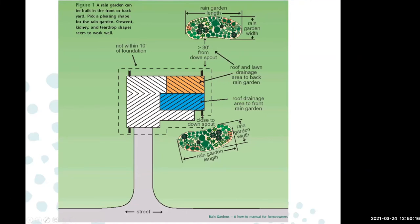Here's an example: if one half of your roof is draining to one side and that's roughly 1,000 square feet, a good estimate from the table in the publication HENV-205 would point to a garden of at least 100 square feet. Suggested dimensions could be 10 by 10, or 7 by 15 — they can be any dimension, plus or minus a little bit. The sizing isn't exact science.